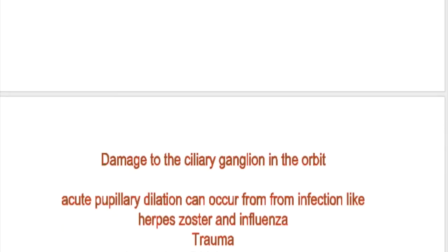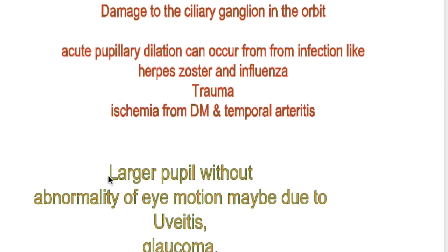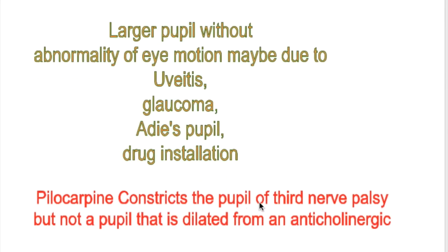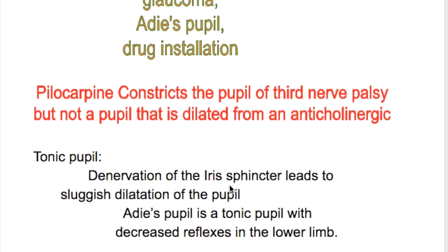Acute pupillary dilatation may occur from infection like herpes zoster and influenza, from trauma, and also from ischemia in diabetes and temporal arteritis. Next, a large pupil without abnormality of eye motion may be due to uveitis, glaucoma, Adie's pupil, or drug instillation. Pilocarpine constricts the pupil in third nerve palsy but not the pupil dilated from anticholinergics.